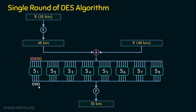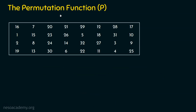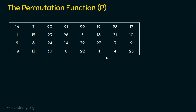Now let's focus on the last part: the permutation box, also called the P-box or transposition box. The input to this P-box is 32 bits and the output is also 32 bits. What actually happens is that the positions of the 32 bits are changed. For example, the first bit is placed at a different position, the second bit elsewhere, and so on. The shuffling ensures the input 32 bits are retained as 32 bits, but only the order of the bits is changed.